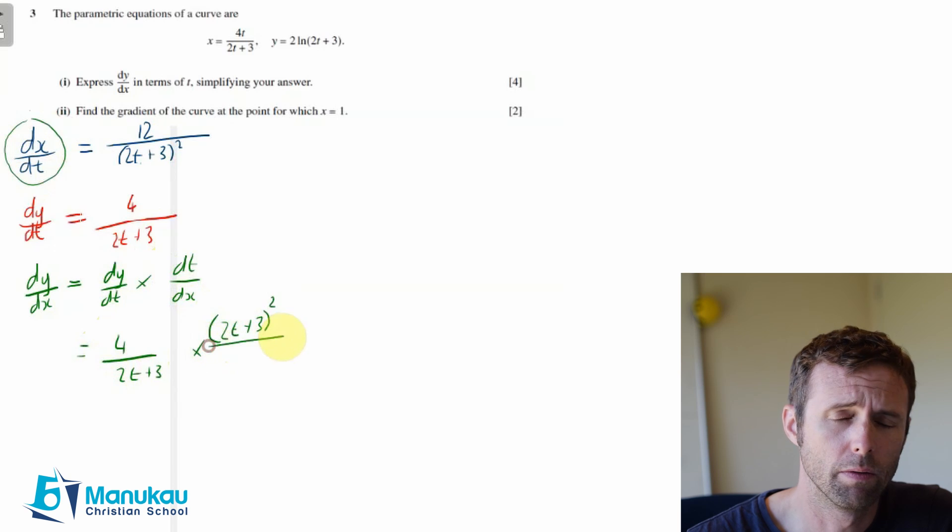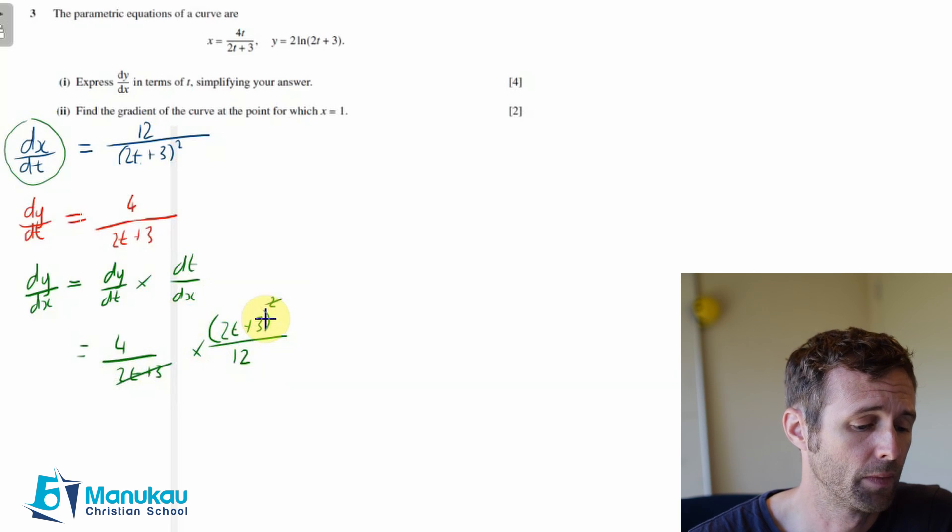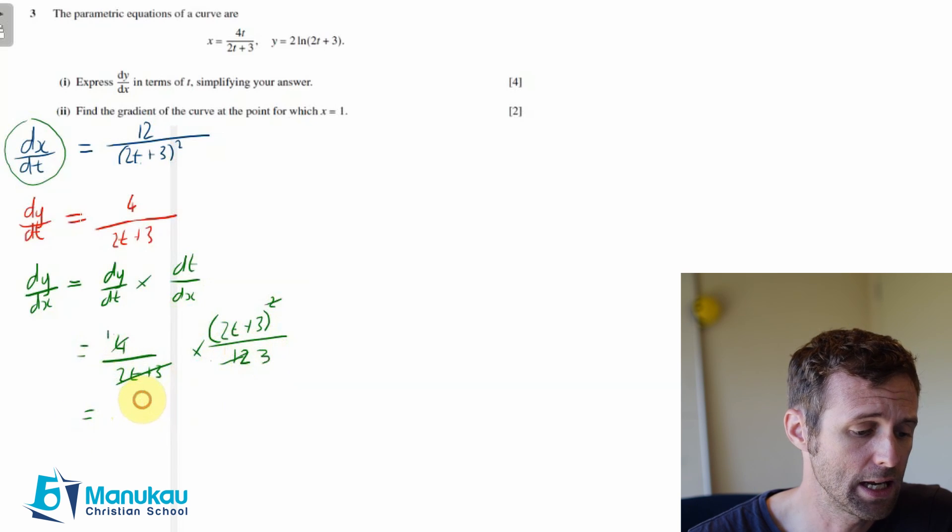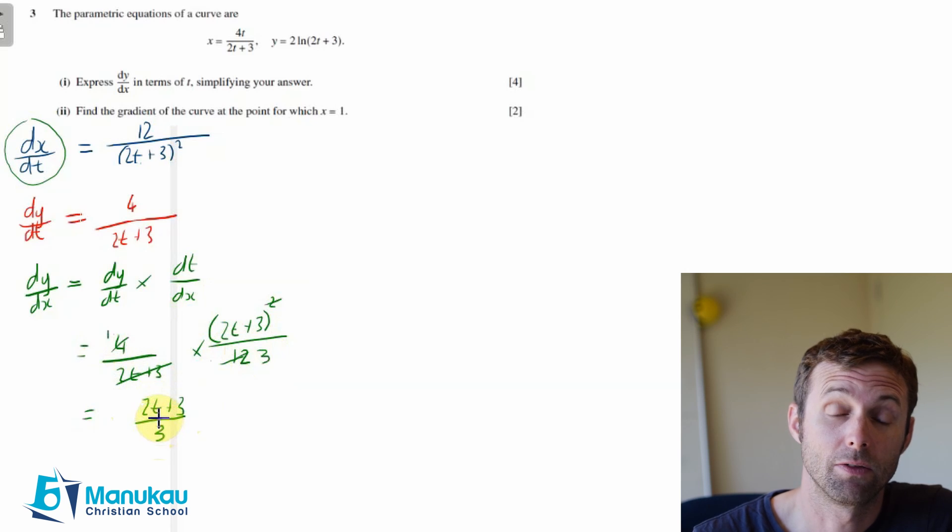Now let's do some simplification as required. The 4 cancels—3 fours are 12, so it's simply a 3 here. And we can say dy/dx is therefore (2t plus 3) over 3, and that's our final answer for that section.